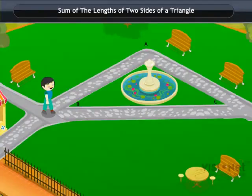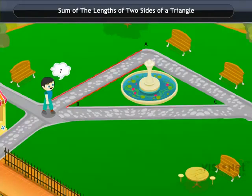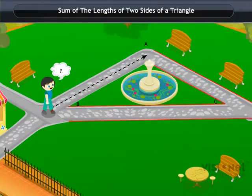Sum of the lengths of two sides of a triangle. Consider this triangular path. Suppose a boy is standing at B and he has to reach point A by walking along the path.